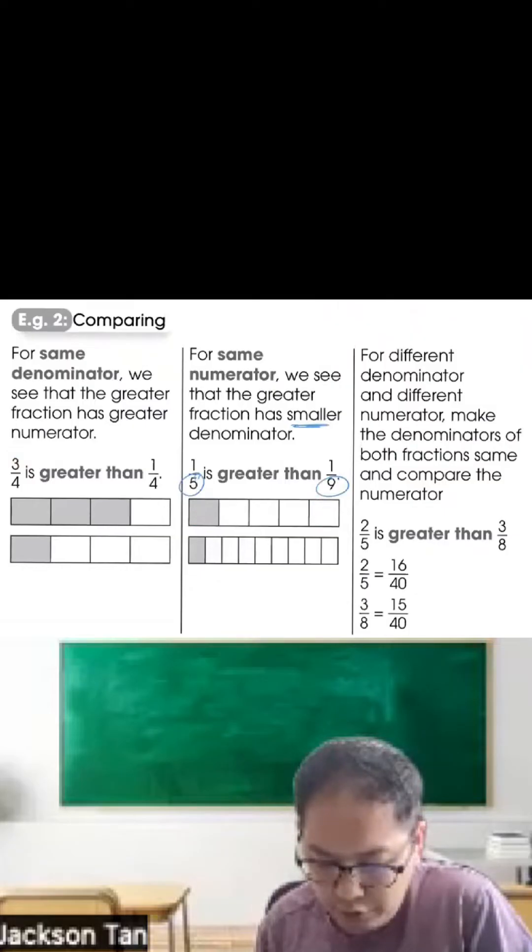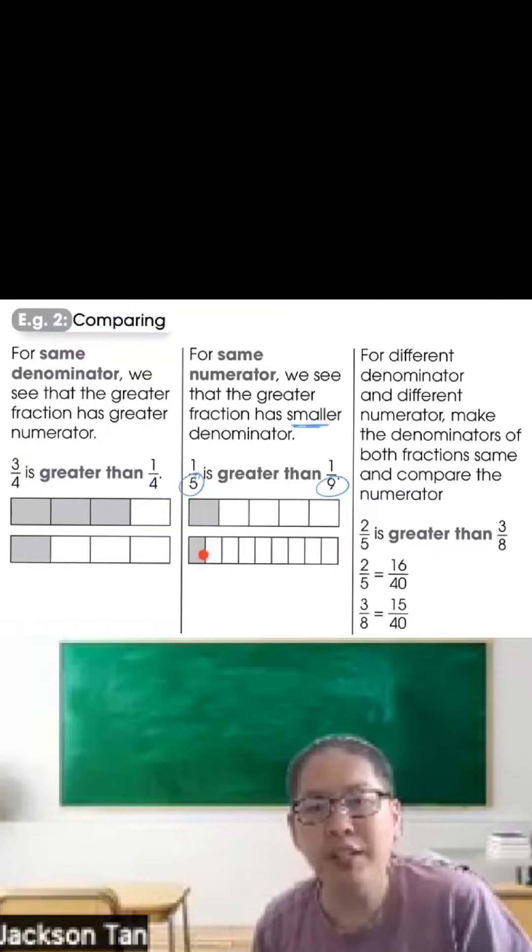If you don't believe, you can draw the picture. The bar cut into 5 parts, shade 1. The same bar cut into 9 parts, shade 1. Can you see 1 out of 5 is greater than 1 out of 9?